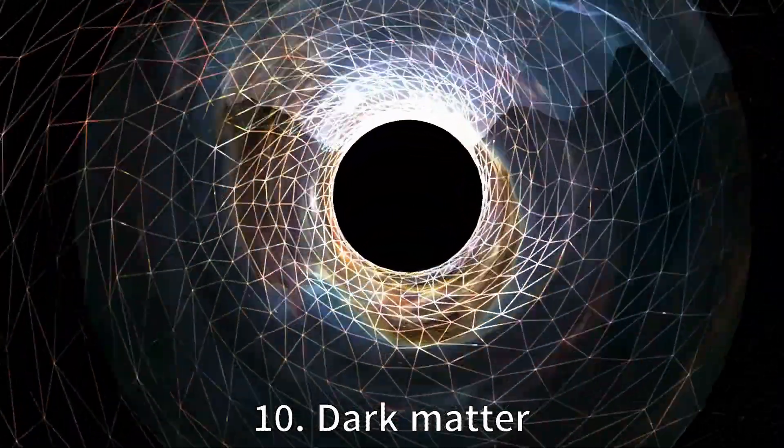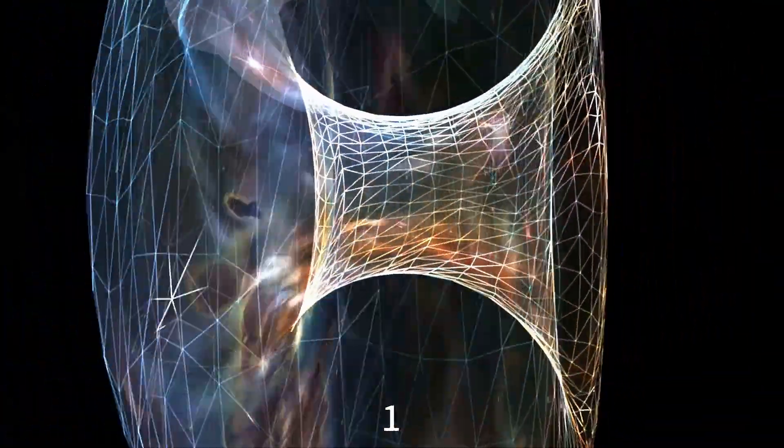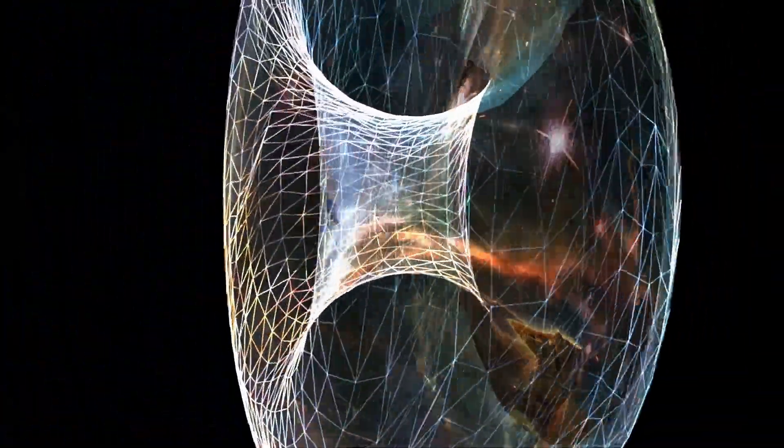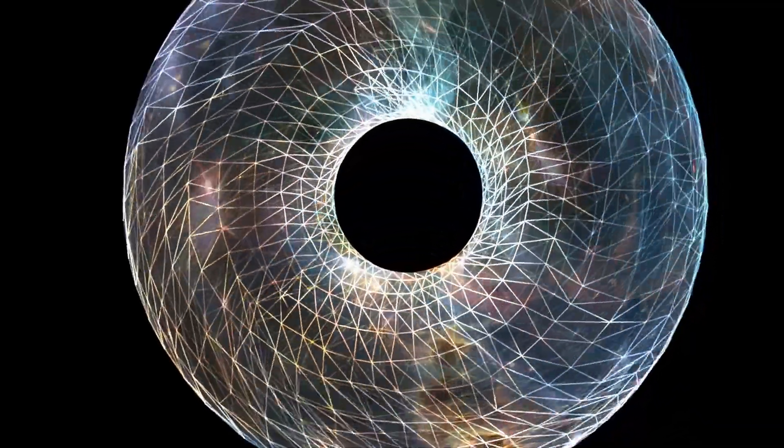The concept of dark matter was proposed to explain the observed gravitational effects on galaxies and galaxy clusters. It is believed to make up around 85% of the matter in the universe, but its exact nature is still unknown.